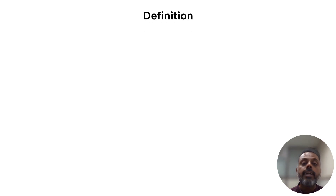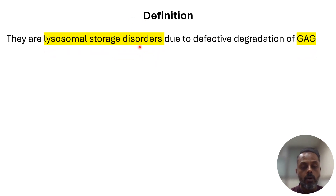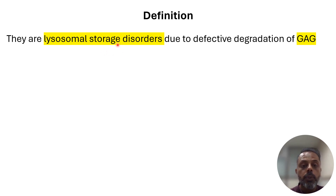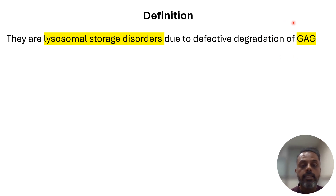Mucopolysaccharidoses are lysosomal storage disorders. They occur due to the deficiency of enzymes related to the lysosomes — specifically, they are lysosomal storage disorders due to defective degradation of glycosaminoglycans or mucopolysaccharides.